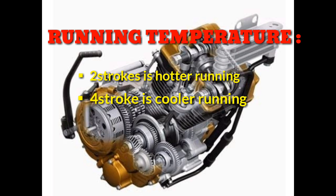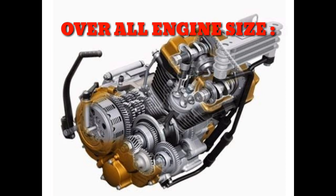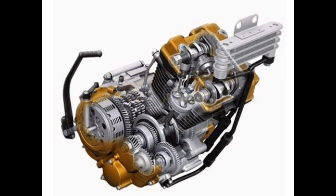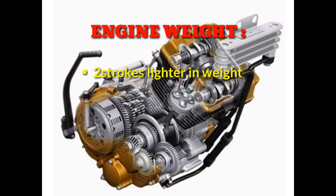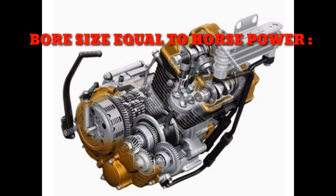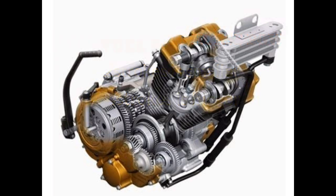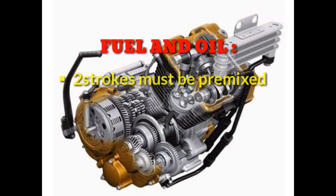Running temperature: two-strokes are cooler running. Overall engine size: two-strokes are smaller, four-strokes are larger. Engine weight: two-strokes are lighter in weight, four-strokes are heavier. For equal bore size and horsepower, two-strokes are smaller and four-strokes are bigger.